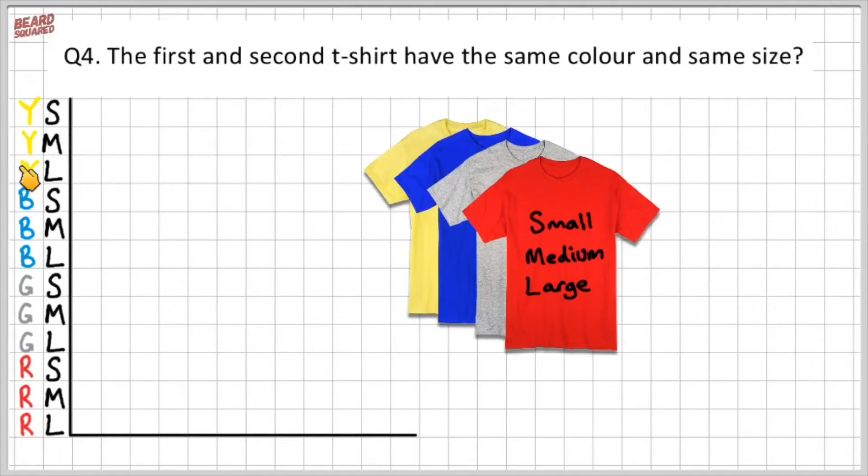Now remember, that's my first pick. So that's my first t-shirt. And then this will represent my second t-shirt. Okay, so for my second t-shirt, I can get a red large, red medium, red small,